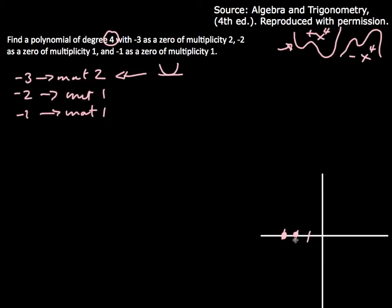It also is going to touch at minus 2, right there, or not touch, it will go through it at minus 2, and it will go through at minus 1. Multiplicity of 1 just goes straight through. If you have multiplicity of 2, it just touches.